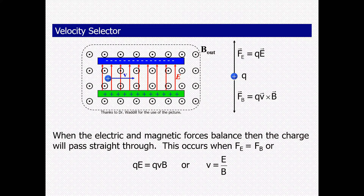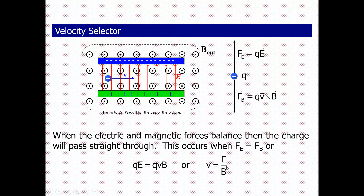The condition for straight-line passage is that the electric force equals the magnetic force: qE = qvB. The charge q cancels from both sides, giving the velocity relation v = E/B. Only particles with this specific velocity pass through undeflected.